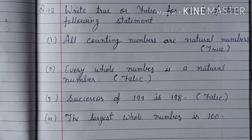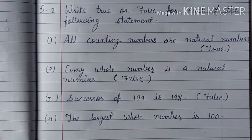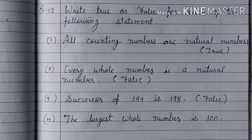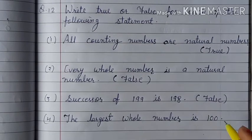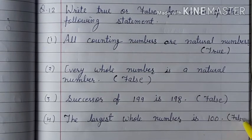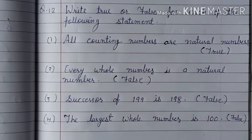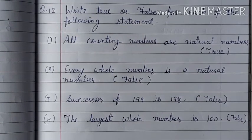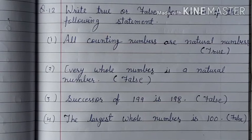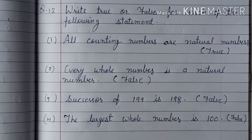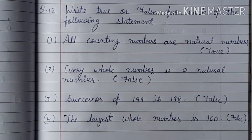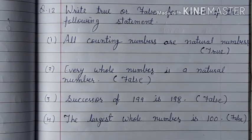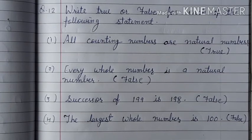And last one is the largest whole number is 100. So it is false. Because whole numbers go to infinity, we cannot count the largest. The smallest whole number is 0, but whole numbers go to infinity and we cannot count which one is the largest.